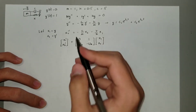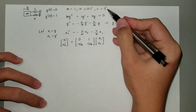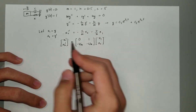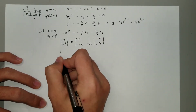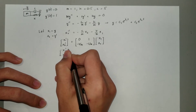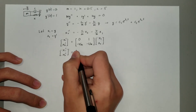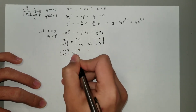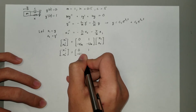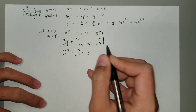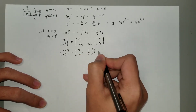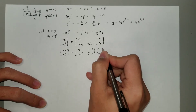Substituting the given values into this matrix, we get [x1', x2'] equals the matrix [0, 1; -0.5, -5] times [x1, x2].